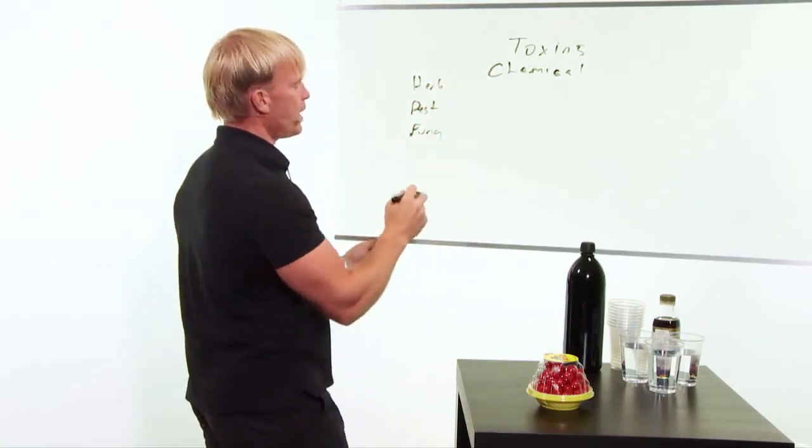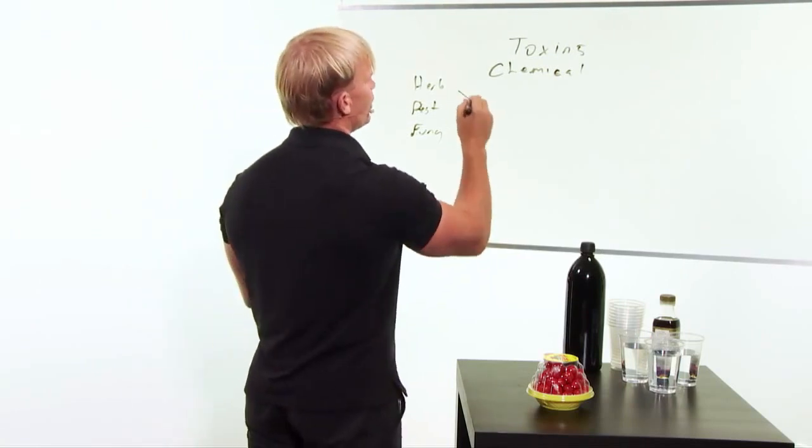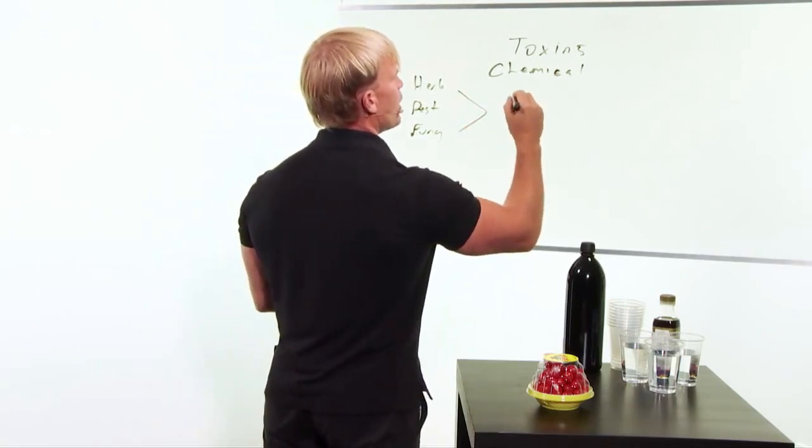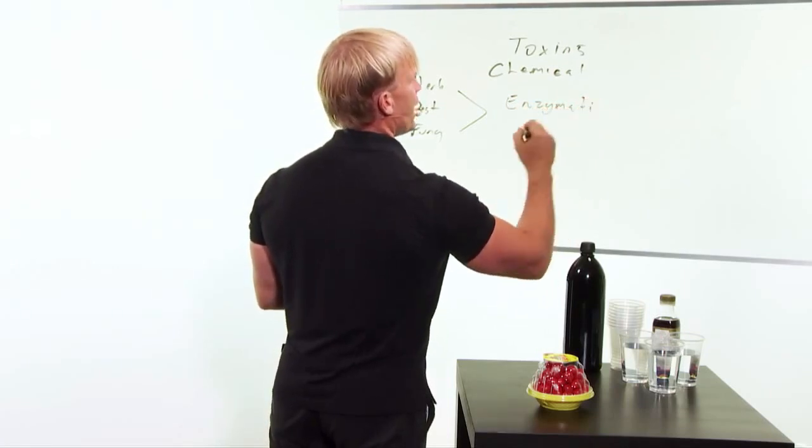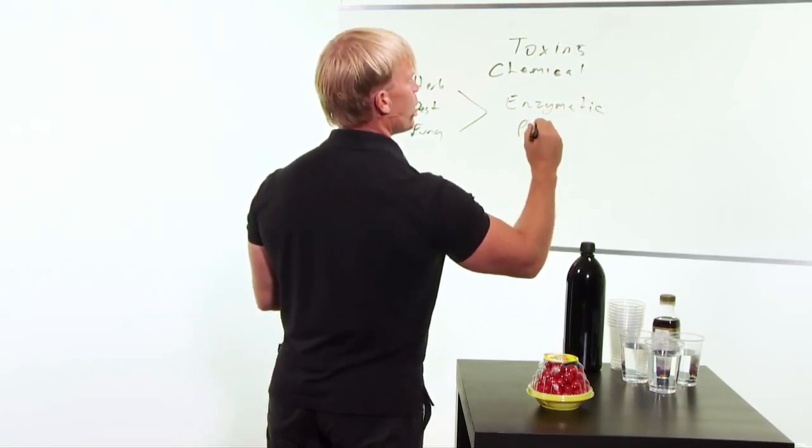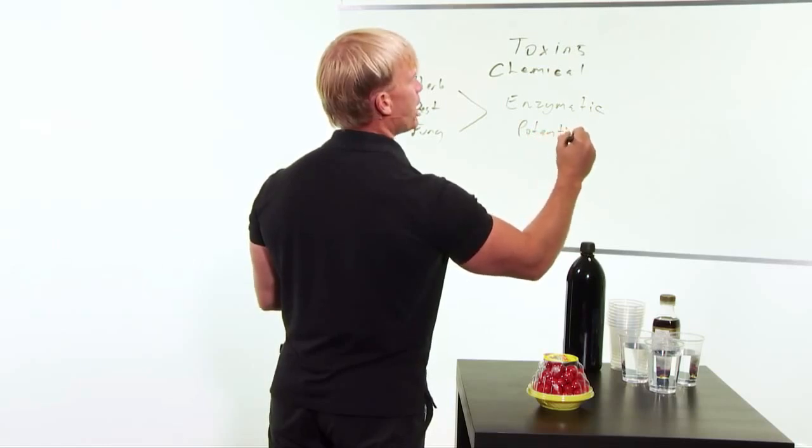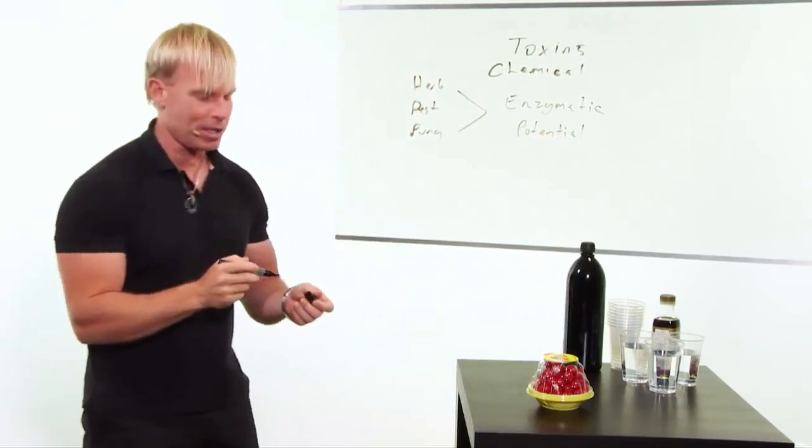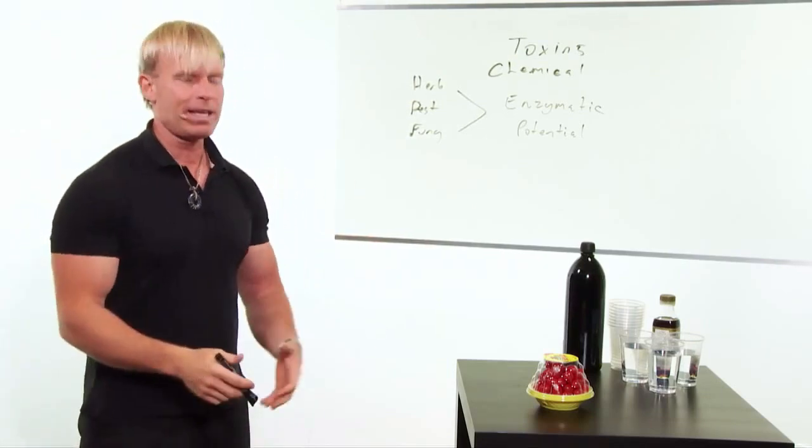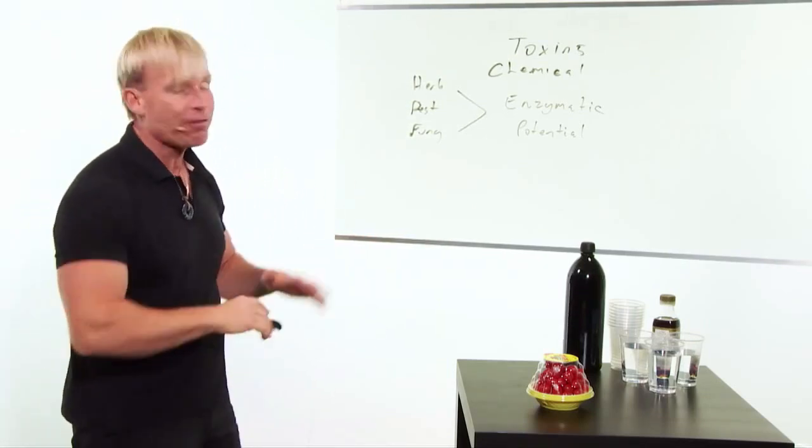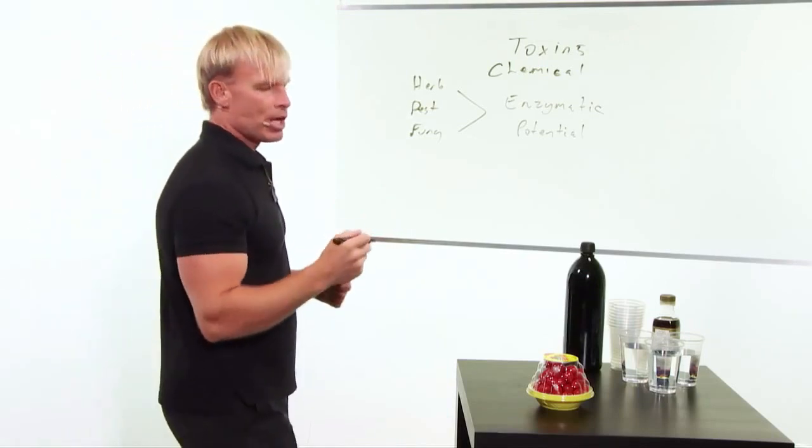What these things do is these are chemicals that interrupt your enzymatic potential. In other words, the amount of workers you have in your body. Remember, enzymes are responsible for everything, thinking to blinking, running your heart, running your organs, cleaning out toxins, making your liver work, making your kidneys work. Everything requires enzymes.